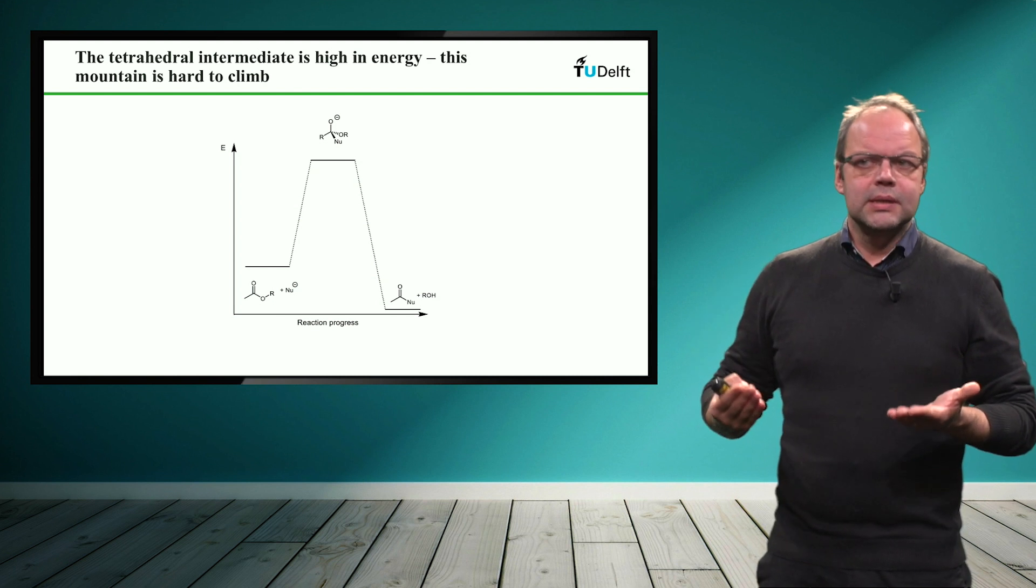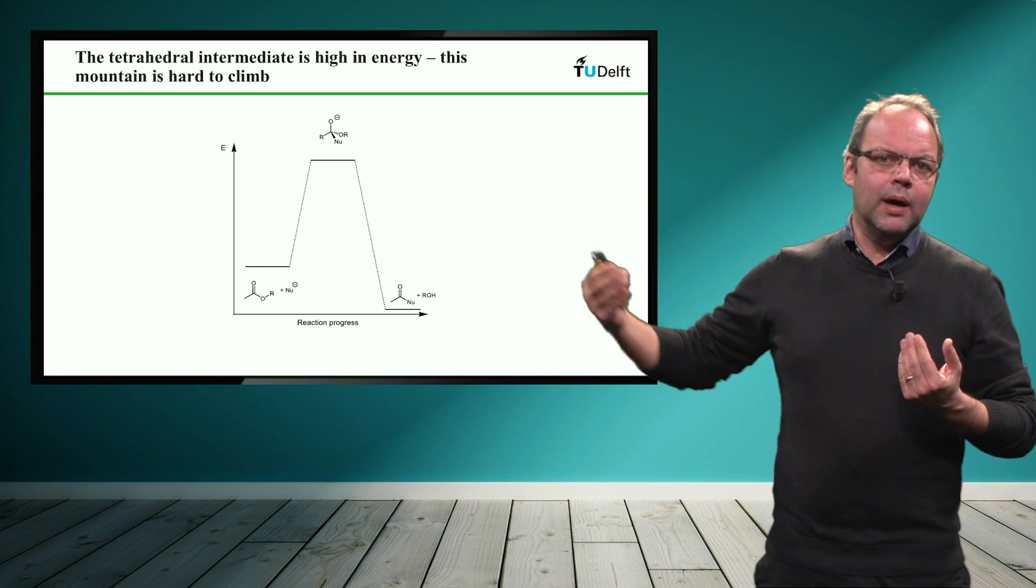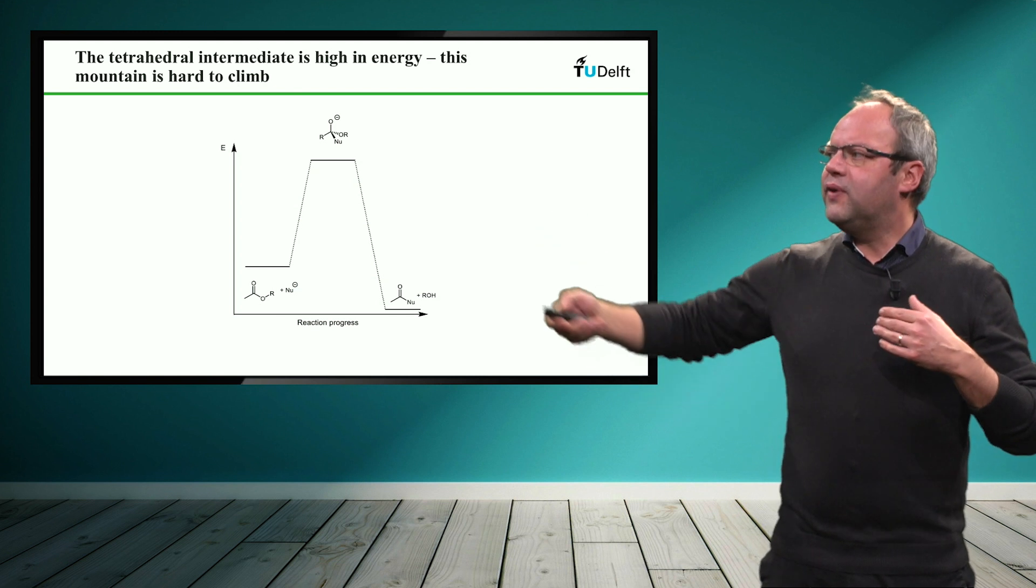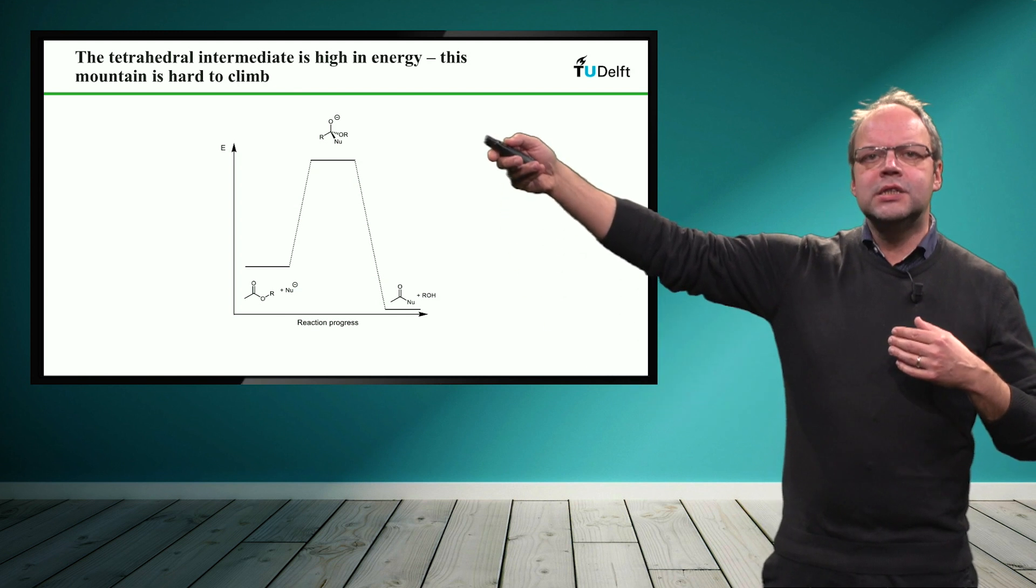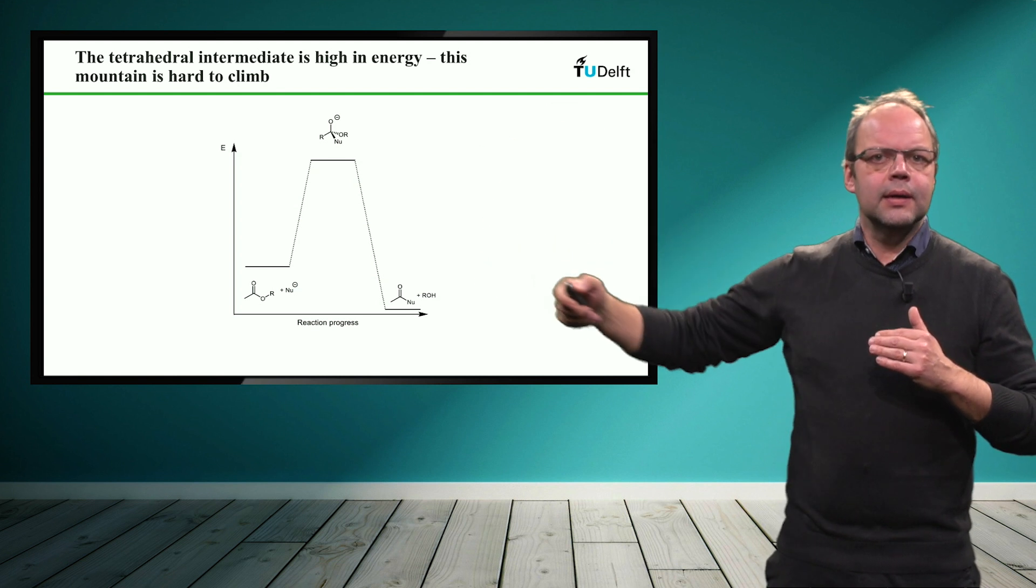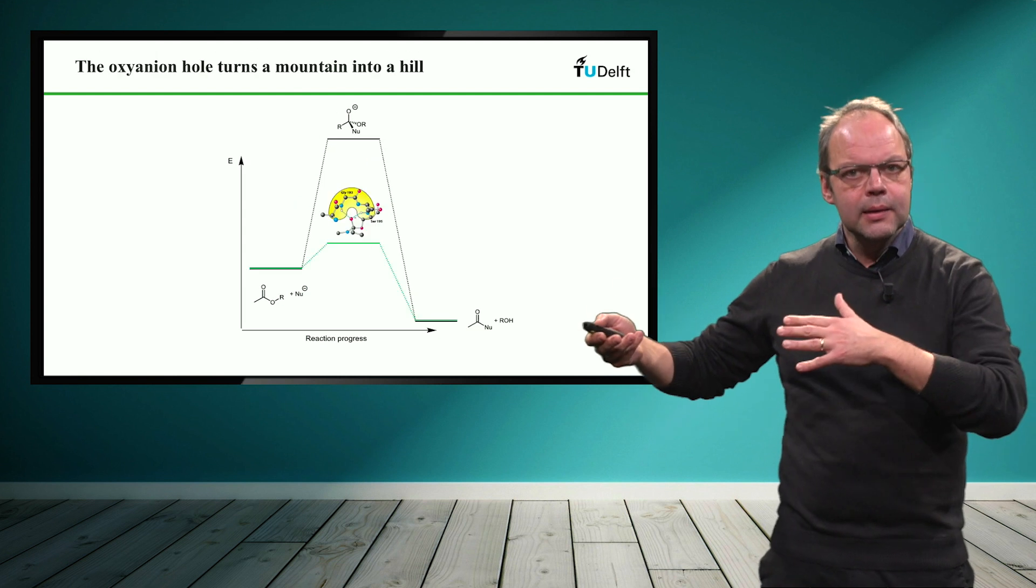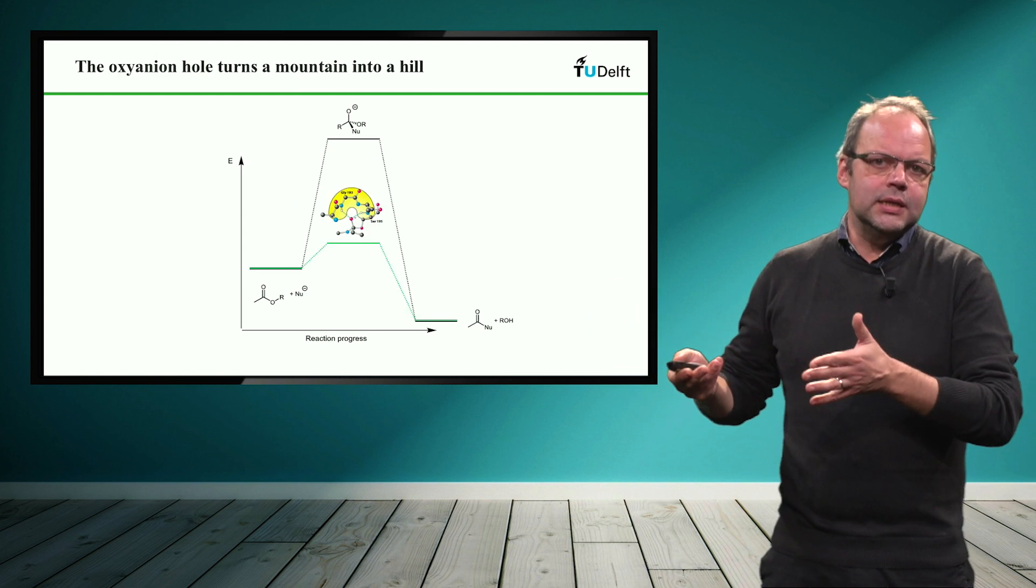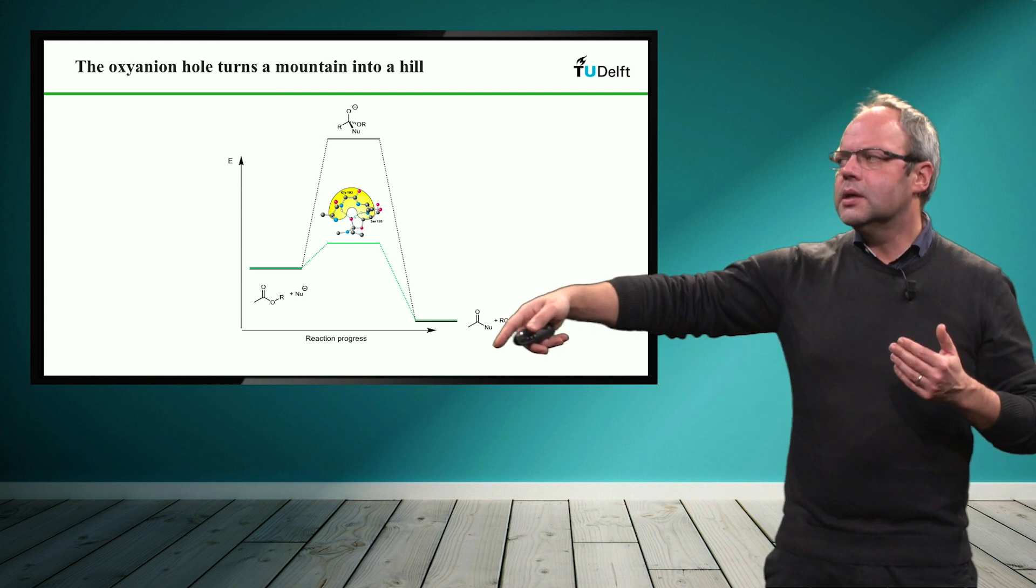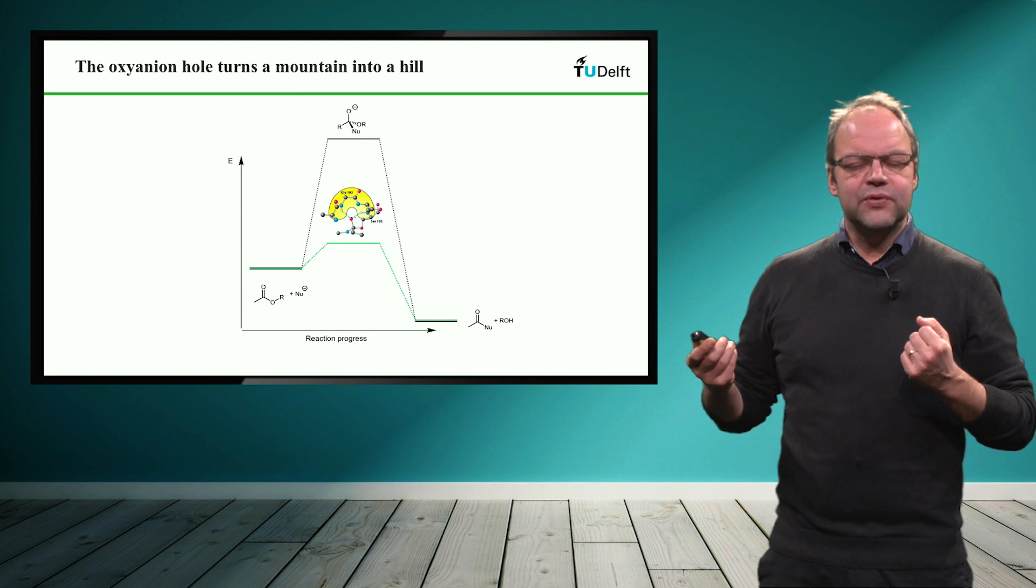And you can imagine yourself climbing a mountain takes time. It's very slow. So if you have a huge mountain to climb, the reaction will be rather slow. So if we find a way to reduce the energy of this intermediate, then we can reduce the height of the mountain and we transform it basically into a hill. And climbing a hill is much easier than climbing a mountain. So you can imagine that this reaction will be much faster.